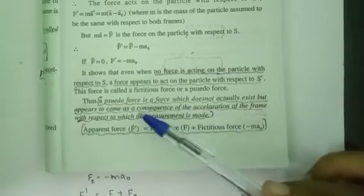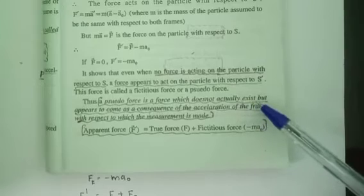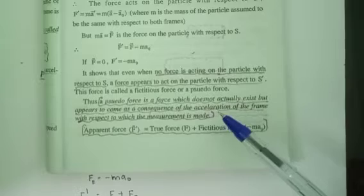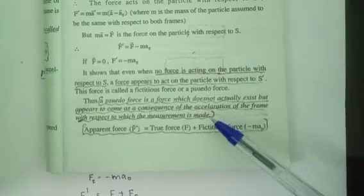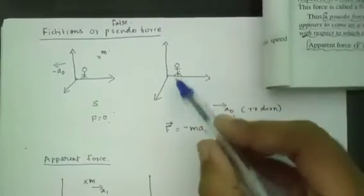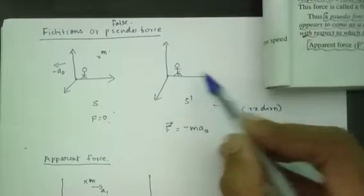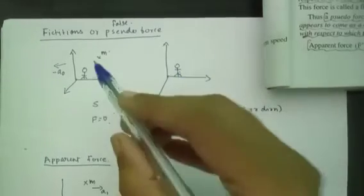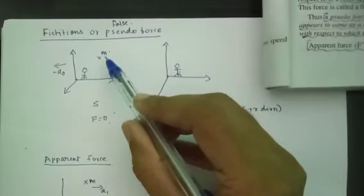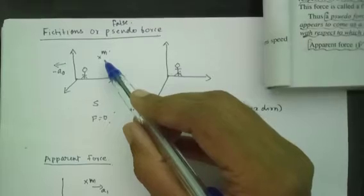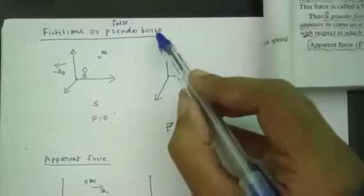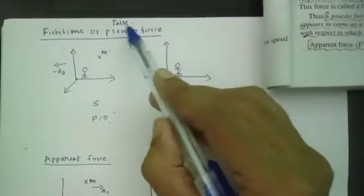In the text, there is a definition of pseudo force: a pseudo force is a force which does not actually exist. It does not exist, but it appears to come as a consequence of the acceleration of the frame with respect to which the measurement is made. Pseudo force, fictitious force, and false force all refer to the same concept.